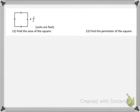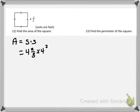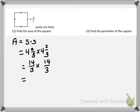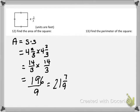Next we're on to our square. We want to find the area of the square — side times side. The side length is 4 and 2 thirds, so we substitute in 4 and 2 thirds times 4 and 2 thirds. Before we can multiply, we change those to improper fractions: 3 times 4 is 12 plus 2 is 14, so that's 14 thirds times 14 thirds. Multiplying across gives 196 over 9, and 196 divided by 9 as a mixed number is 21 and 7 ninths. So our area is 21 and 7 ninths feet squared.